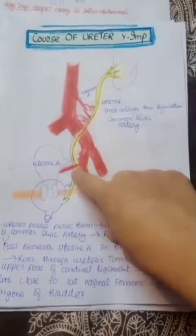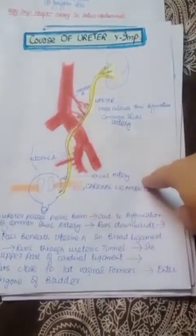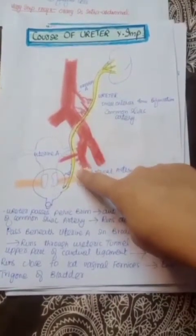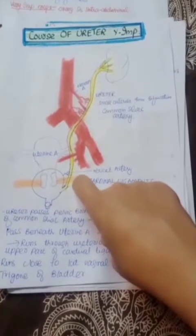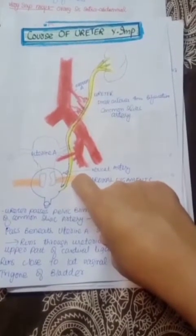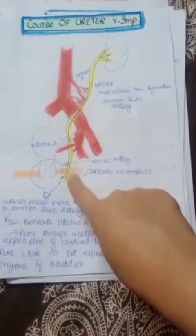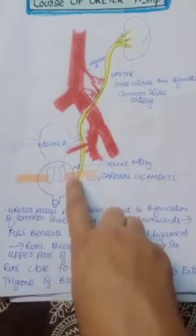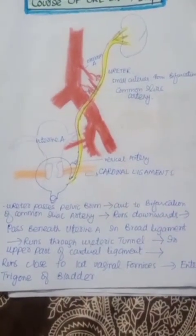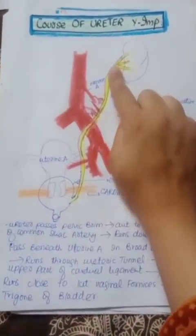As it runs downwards, it passes beneath the uterine artery, shown in red, which is in the broad ligament. It then runs through the ureteric tunnel in the upper part of the cardinal ligament — also called the transverse cervical ligament. The ureter passes beneath the cardinal ligament, runs close to the lateral fornices of the vagina, and enters the trigone of the bladder.